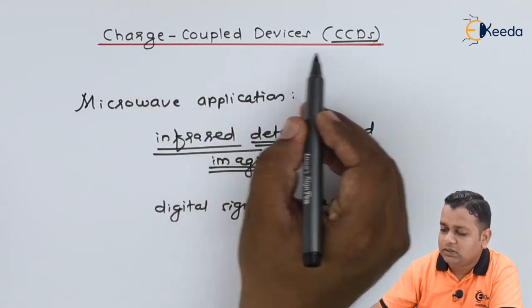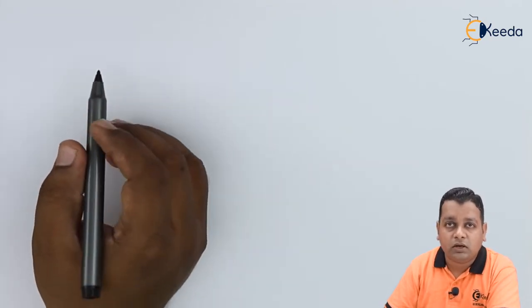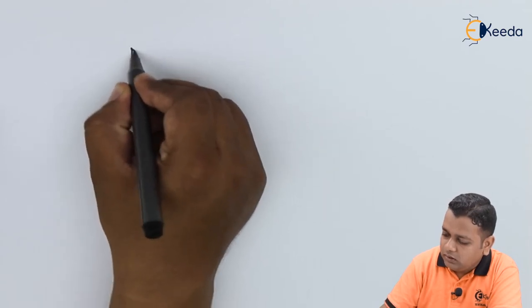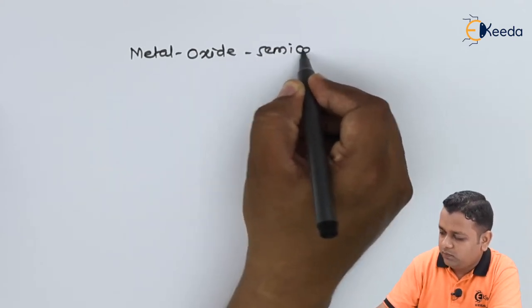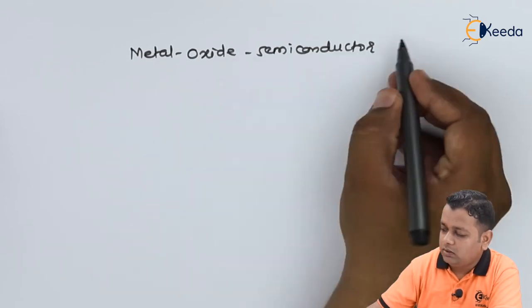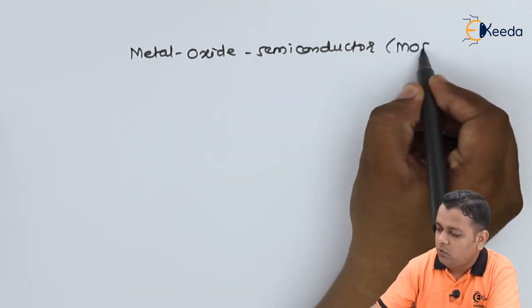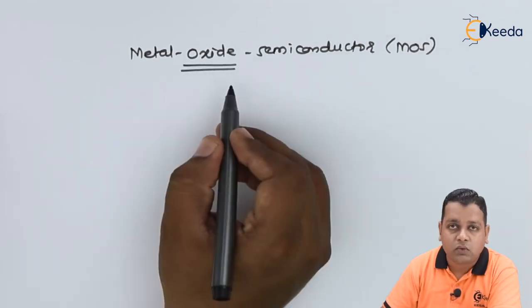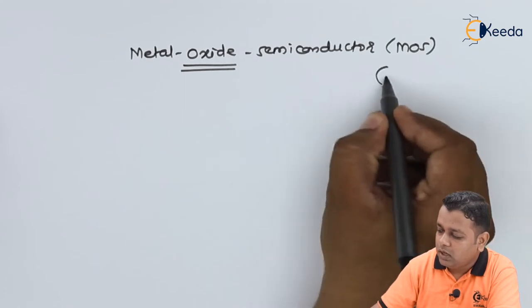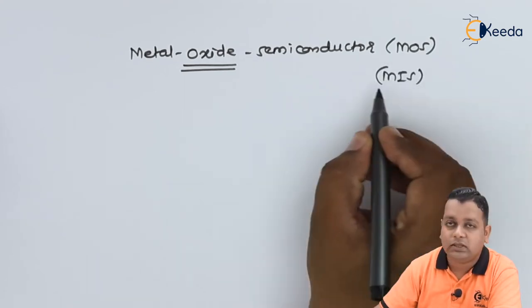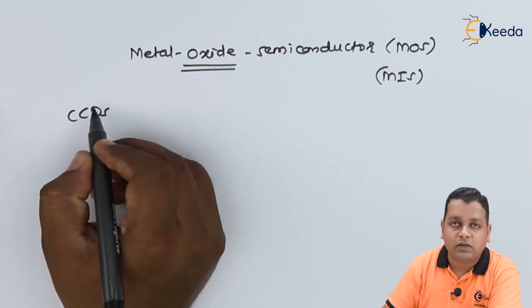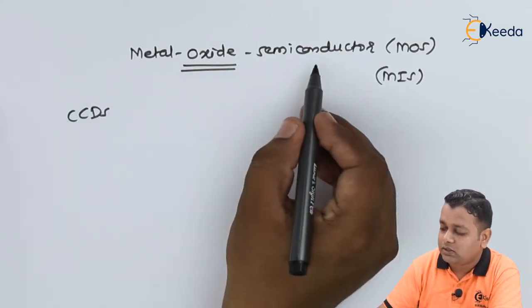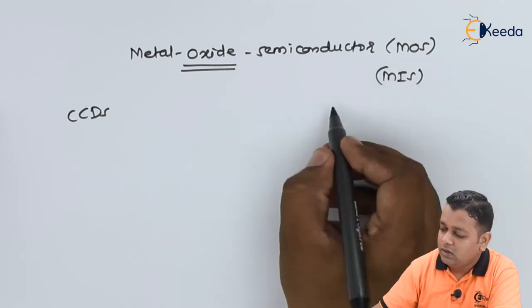What exactly are CCDs or Charged Coupled Devices? When we talk about the structure on the semiconductor platform, these are nothing but metal oxide semiconductor structures, abbreviated as MOS. The oxide, for example SiO₂, is an insulator, so MOS is also referred to as MIS — Metal Insulator and Semiconductor. Charged Coupled Devices are nothing but having the structure of MOS or MIS diodes.